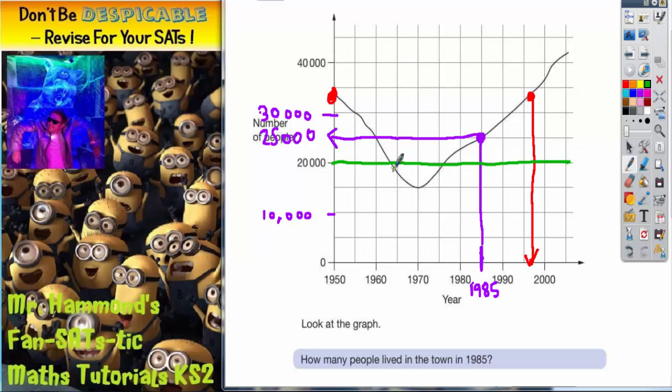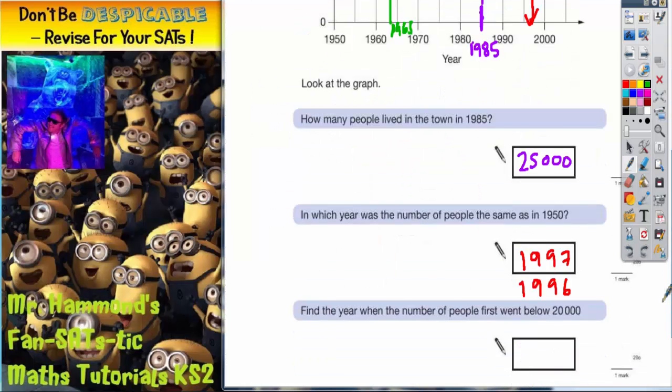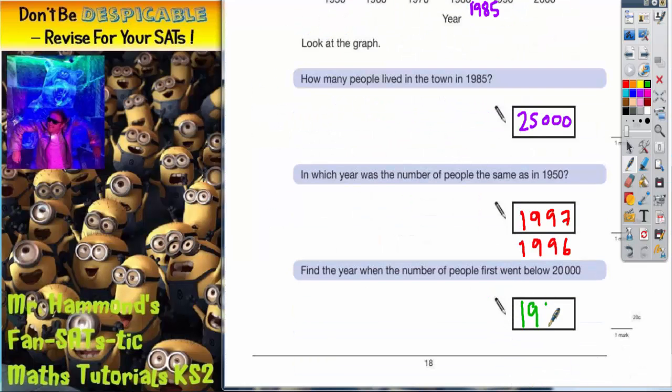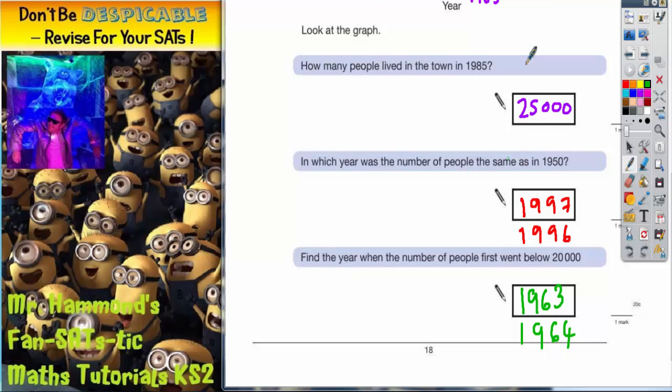So the first year when it goes below that is about here, just dropping below 20,000. So the question is, what year is this? We've drawn a line down. Again, this is 1960 and 1970, so halfway between is 1965. It's a bit lower than 1965, so I'm going to put 1963, although you may be allowed 1964 as well. And there's your three answers.